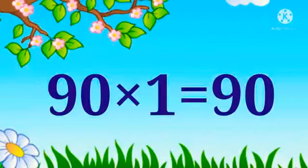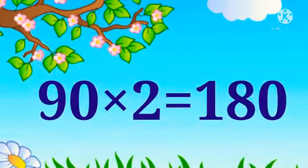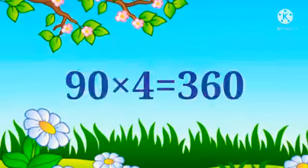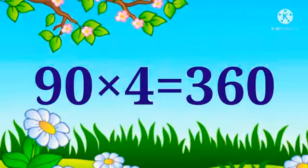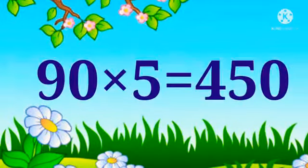90 times 1 is 90. 90 times 2 is 180. 90 times 3 is 270. 90 times 4 is 360. 90 times 5 is 450.